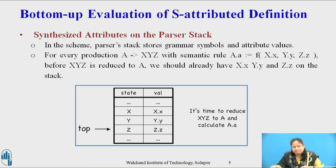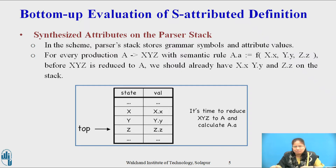We assume that the synthesized attributes are evaluated just before each reduction. Suppose the semantic rule A.a = f(X.x, Y.y, Z.z) is associated with the production A → XYZ. So before XYZ is reduced to A, the value of the attribute Z.z is in val[top], that of Y.y is in val[top-1], and that of X.x is in val[top-2].